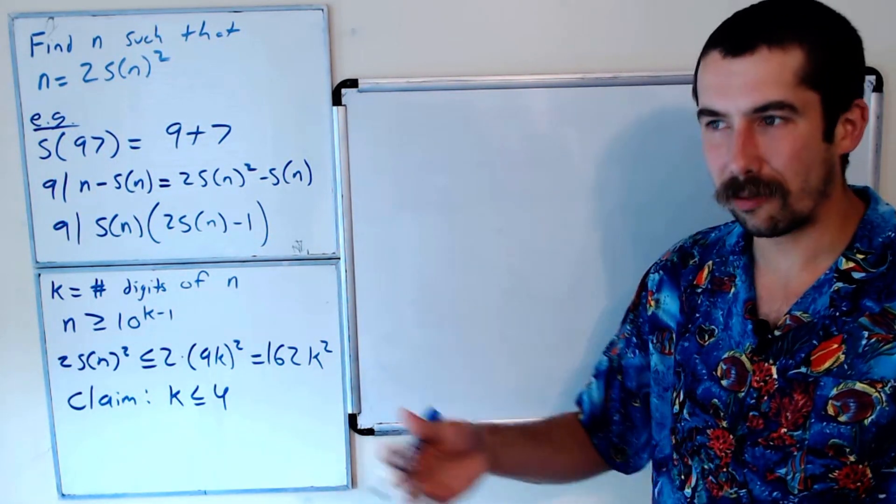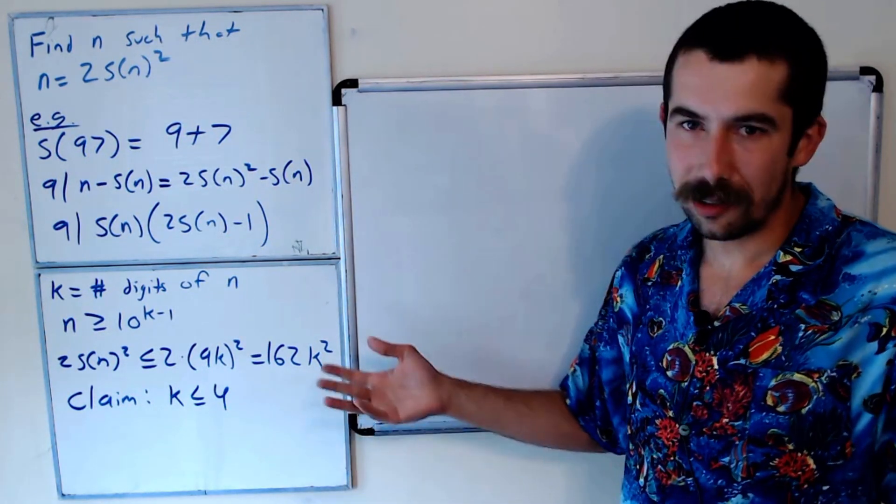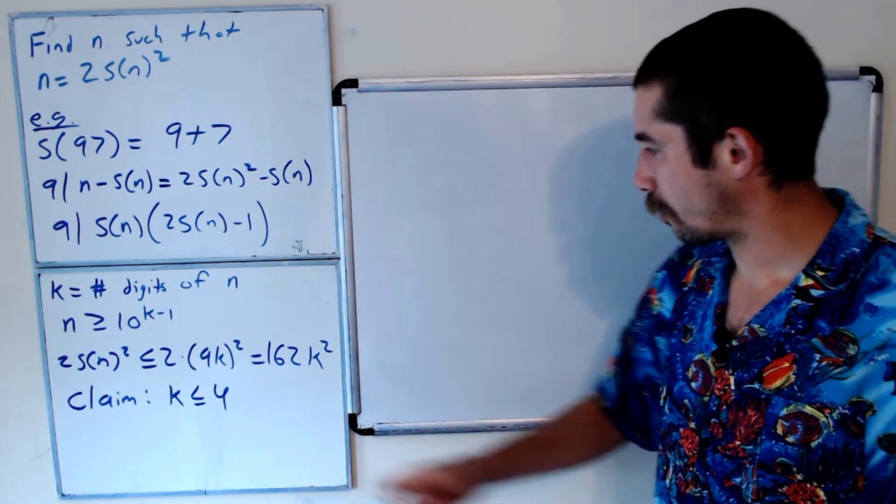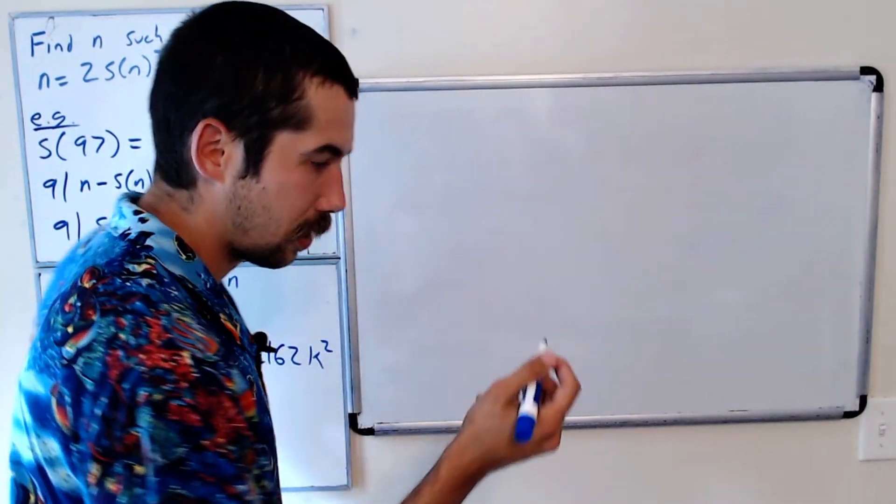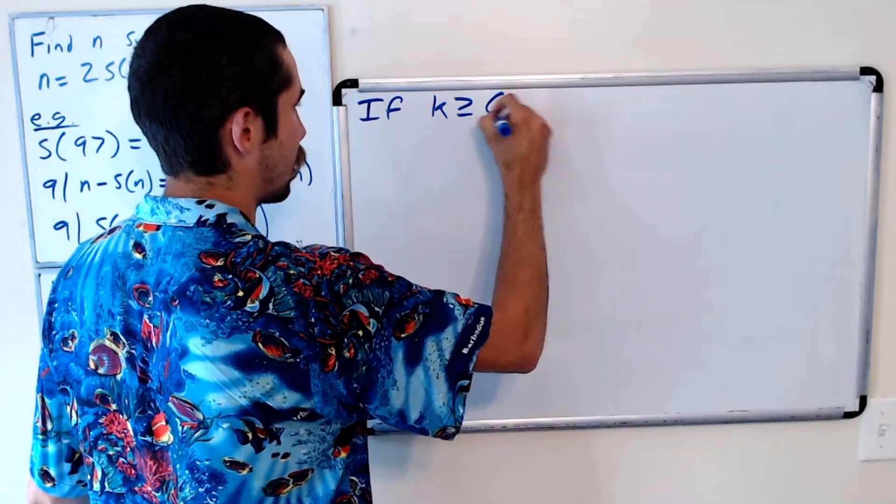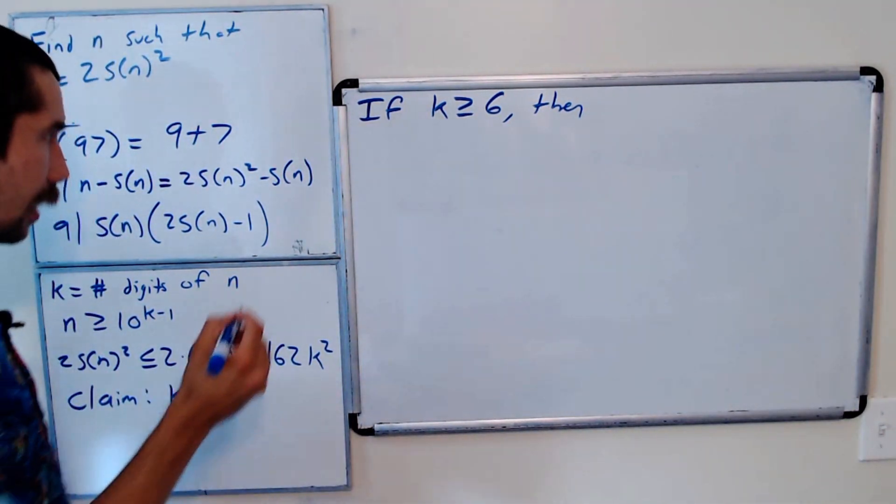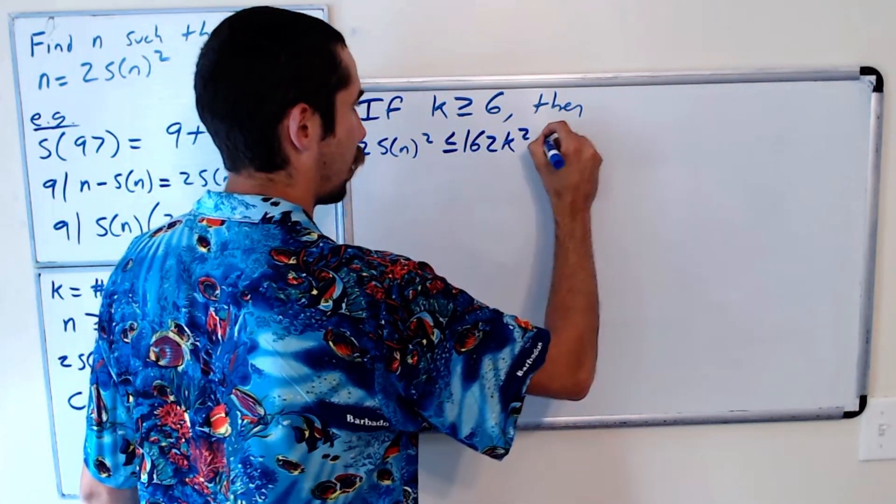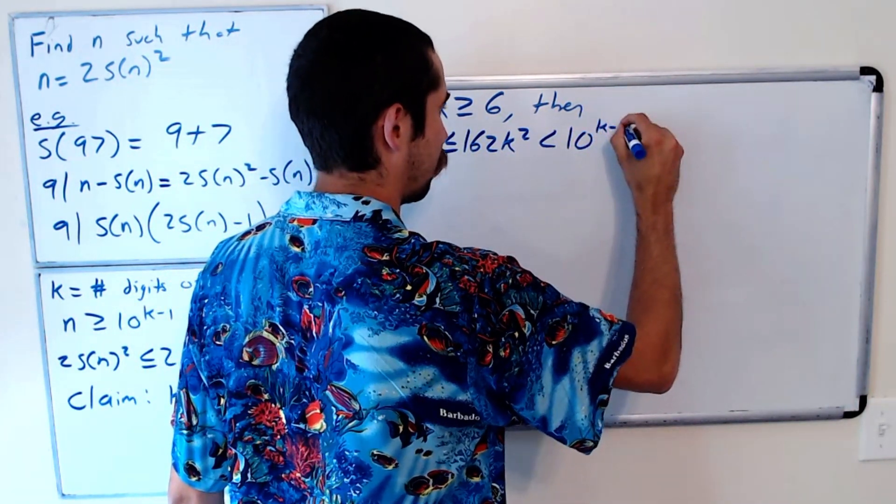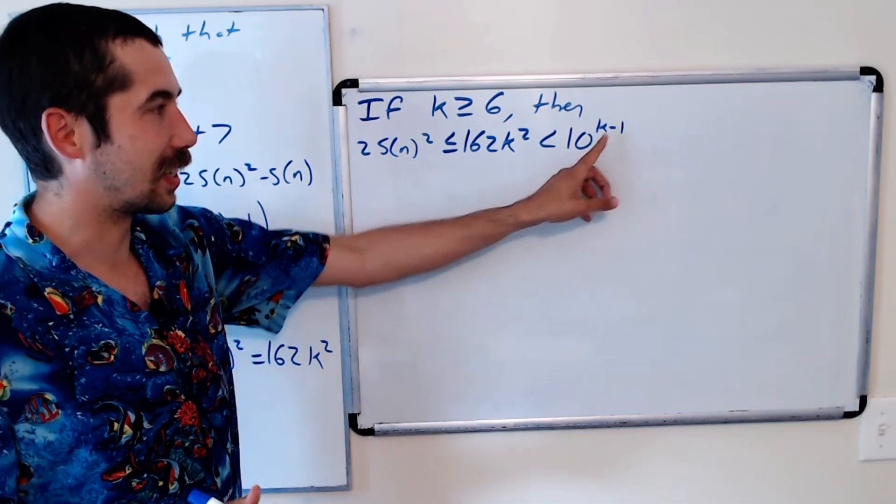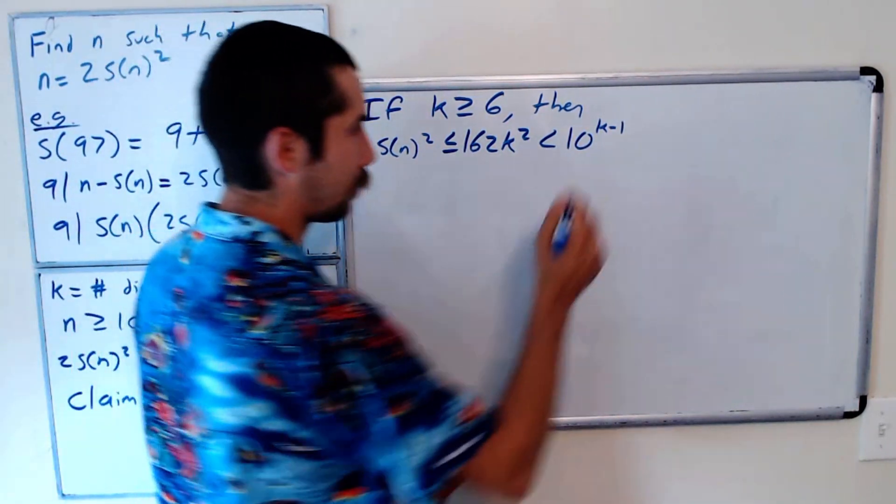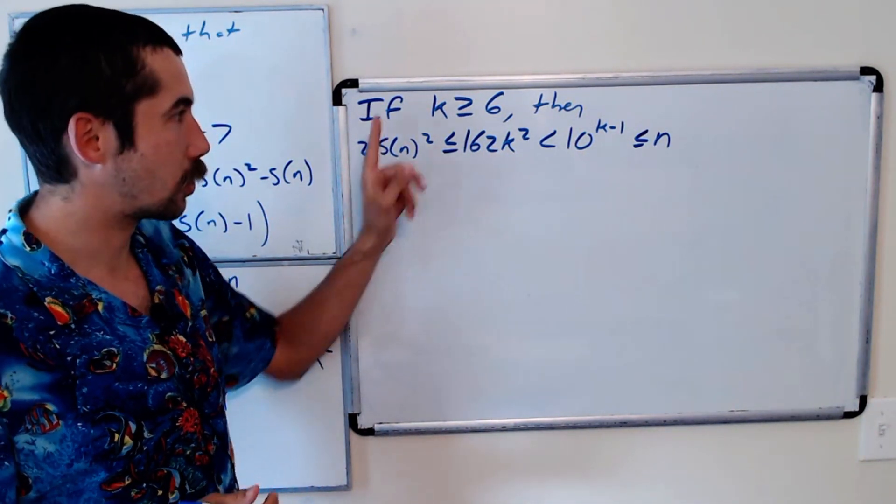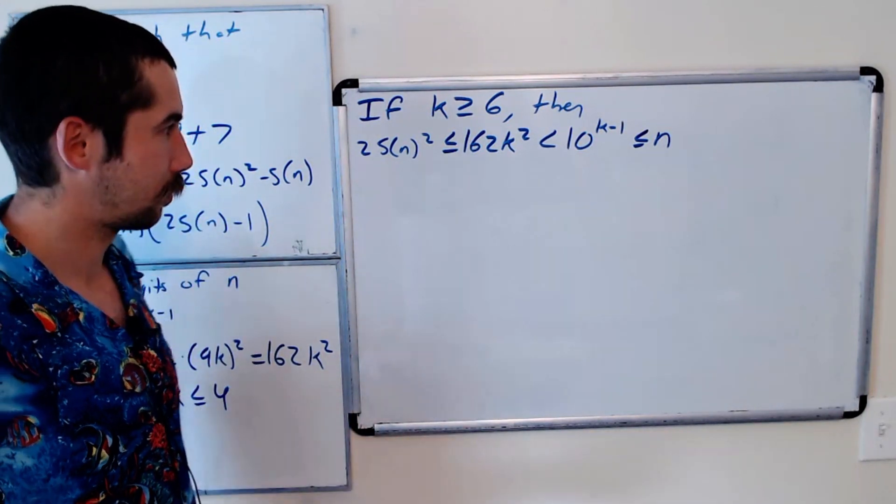Throughout this video, feel free to pause it and try to finish at any point along the way because you'll learn better when you try it on your own. Watching people solve problems is great and all, but actually doing the problems on your own is a good way to learn. So the claim is that k is less than or equal to 4. Let's break it into two cases. The first case is if k is greater than or equal to 6. Then 2S(n)², which we said is less than or equal to 162k², is strictly less than, and then we would need to prove this by induction, that's another homework assignment for you. This is strictly less than 10 to the k minus 1, which is less than or equal to n. But that's a contradiction because we said that n is equal to 2S(n)². So it cannot be the case that k is greater than or equal to 6.